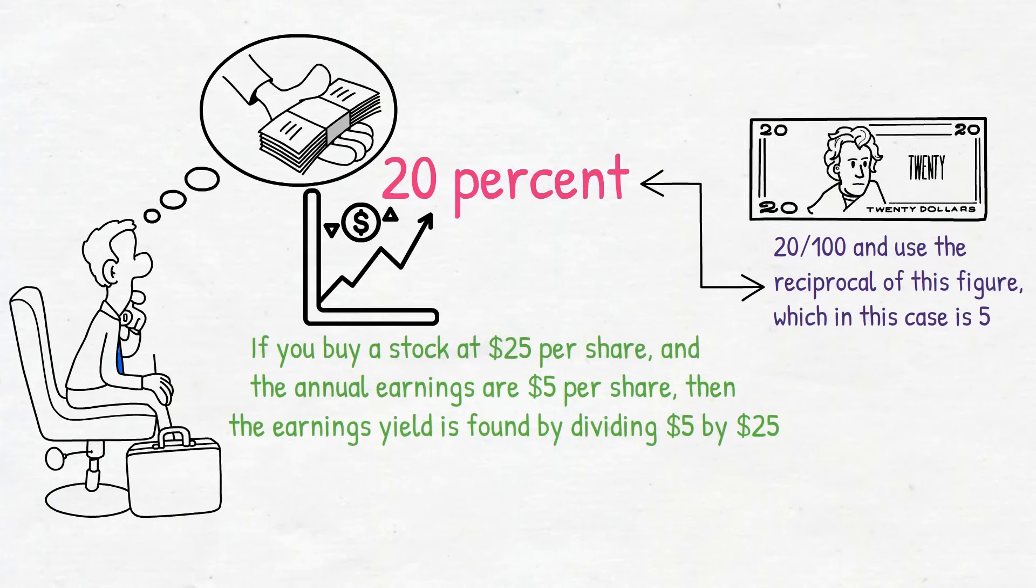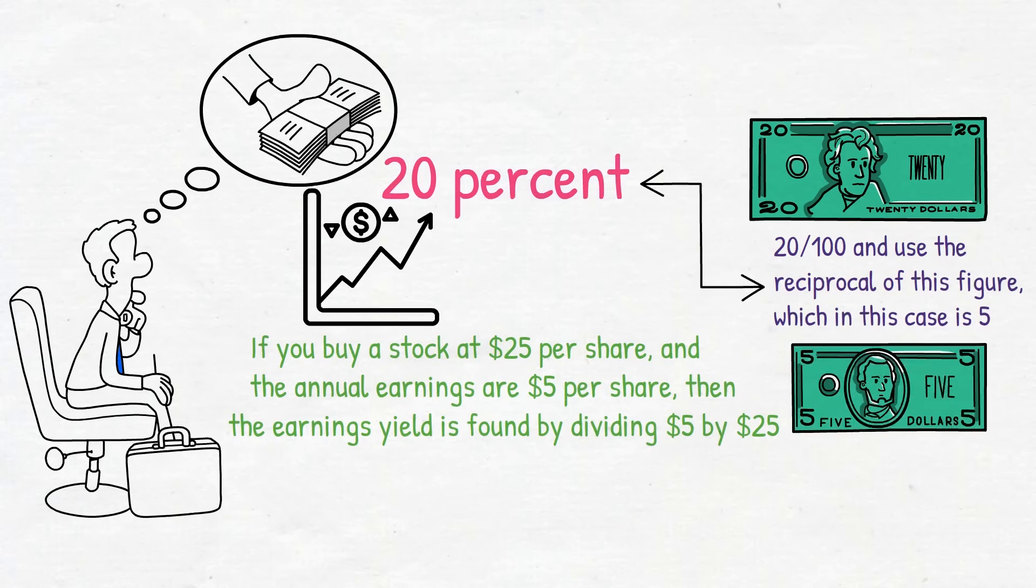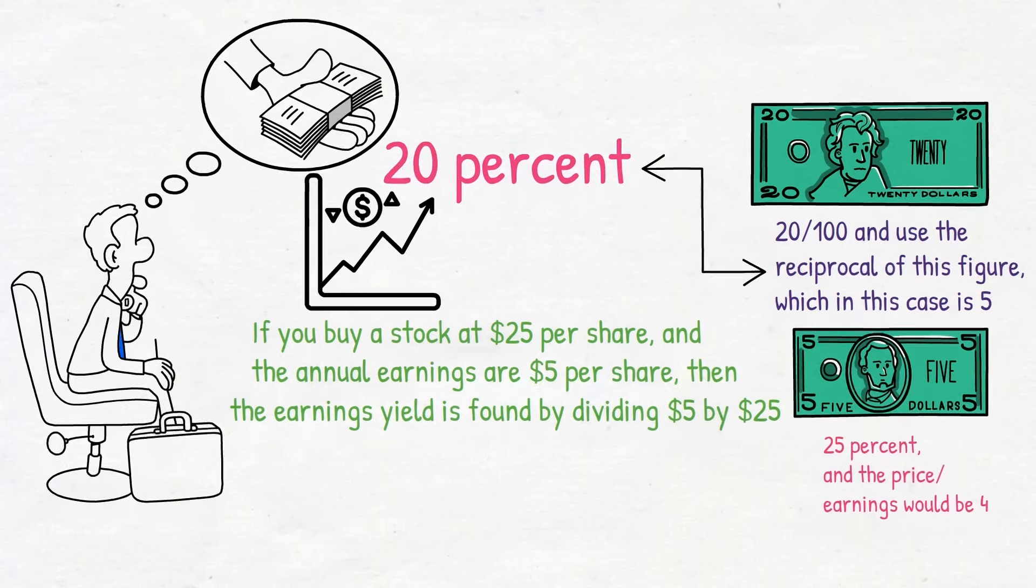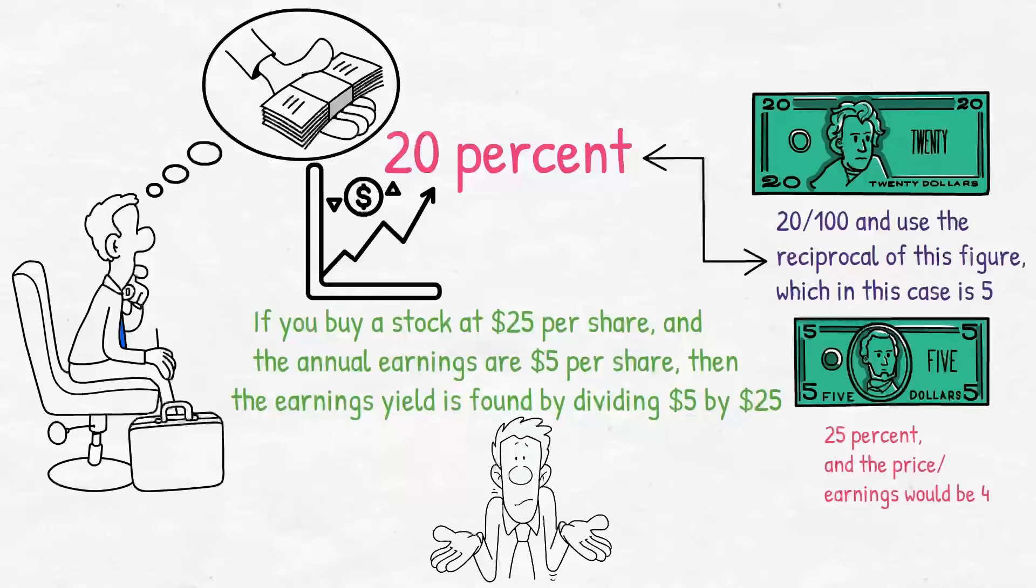If you could get this same stock for $20 per share with the same earnings of $5, the earnings yield would be 25 percent and the price to earnings would be 4. This shows that a stock with a lower earnings ratio is preferable to a higher one. Lastly, number one: book value.